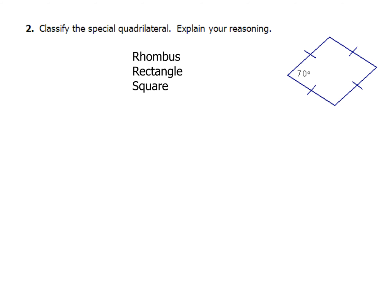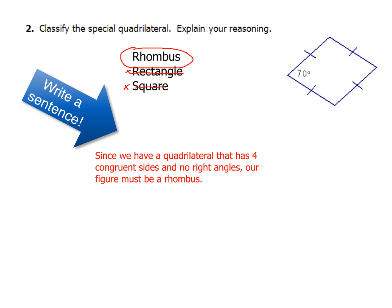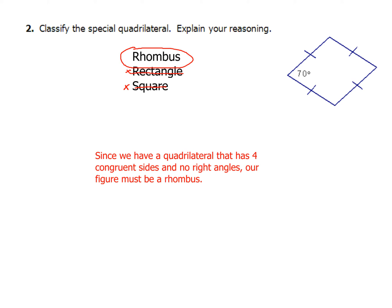For the next figure, we need to determine whether it's a rhombus, rectangle, or square. One angle is 70 degrees and all four sides are the same length. Since all four sides are equal, it can't be a rectangle. Since there are no right angles, it can't be a square. Since it has four congruent sides and no right angles, our figure must be a rhombus.